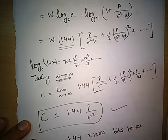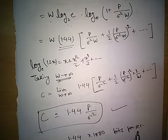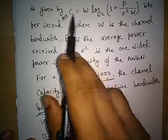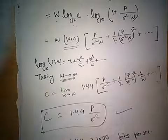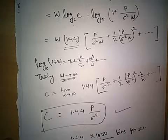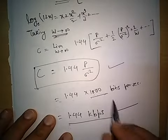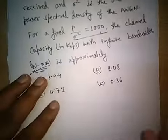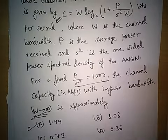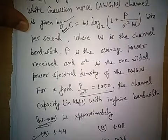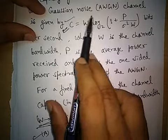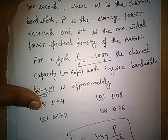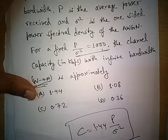For the given problem, P/σ² is fixed at 1000 and W tends to infinity. We directly apply the infinite bandwidth formula: C = 1.44 × 1000 bits per second, which equals 1.44 kilobits per second. The answer matches option 1.44 kbps. The special case of Shannon's channel capacity theorem is: when W → ∞, C equals 1.44 × P/σ², and this must be memorized as it is commonly asked in exams.